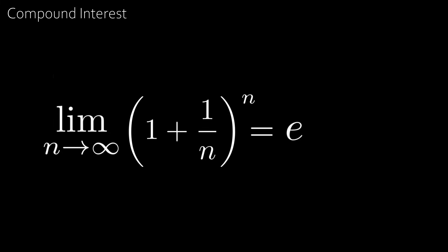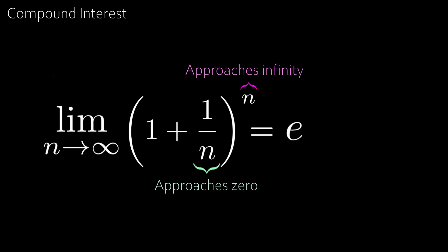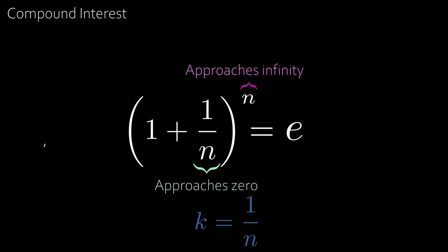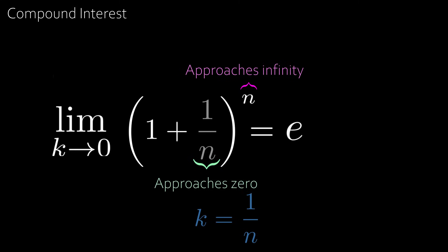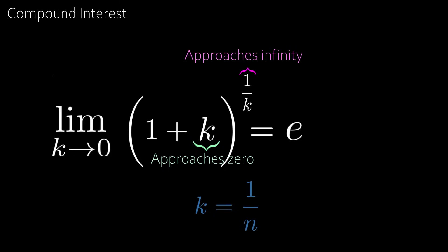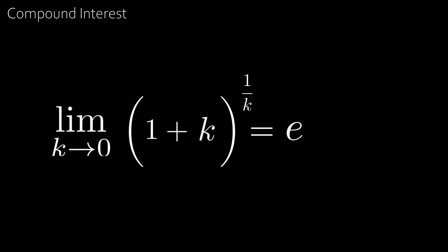As n approaches infinity, 1/n approaches 0 and the exponent n approaches infinity. If we make the substitution k = 1/n, then k approaching 0 replaces n approaching infinity, and we get the limit as k approaches 0 of (1 + k)^(1/k). This is another more useful way of writing the number e.